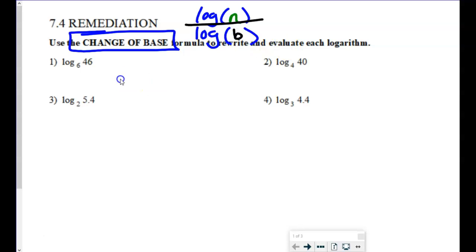So for instance, on number one, the way we'd rewrite that is we would write the common log of N, which is 46, and we're going to divide that by the common log of the base, which is 6.